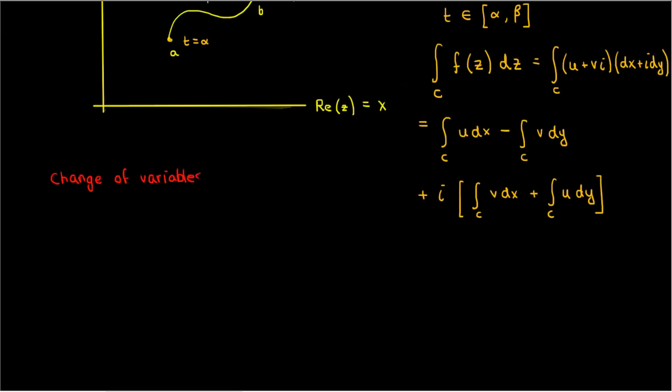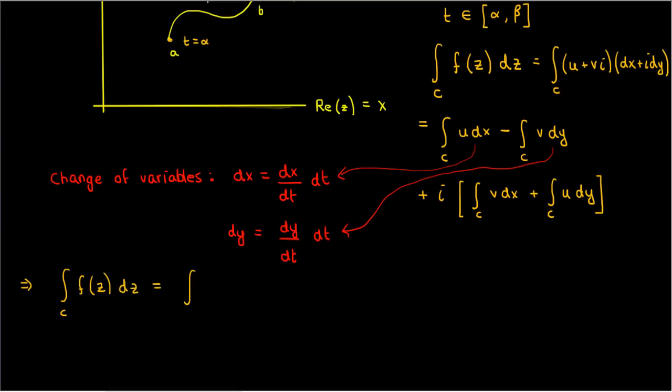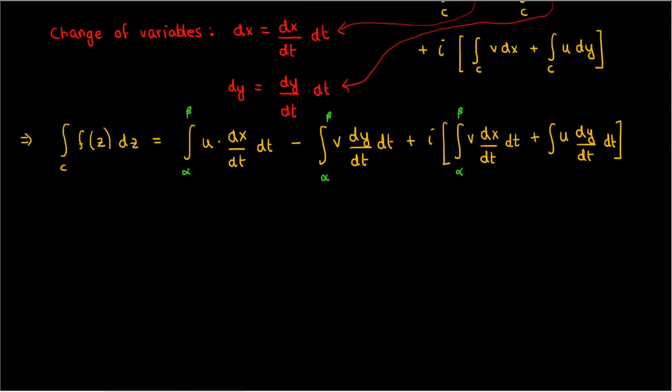We can now make a change of variables by writing the differential dx as the product of dx by dt times dt, and doing the same for the differential dy. Since the integration variable has now changed to t, we need to change the limits of integration accordingly. In this case the limits of integration all become alpha and beta, because that's what t varies along, it varies from alpha to beta on the curve c. And we're done!